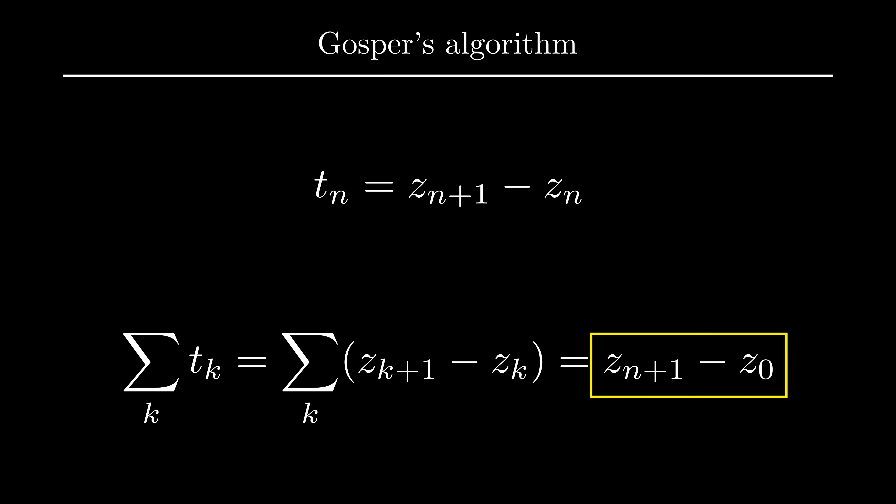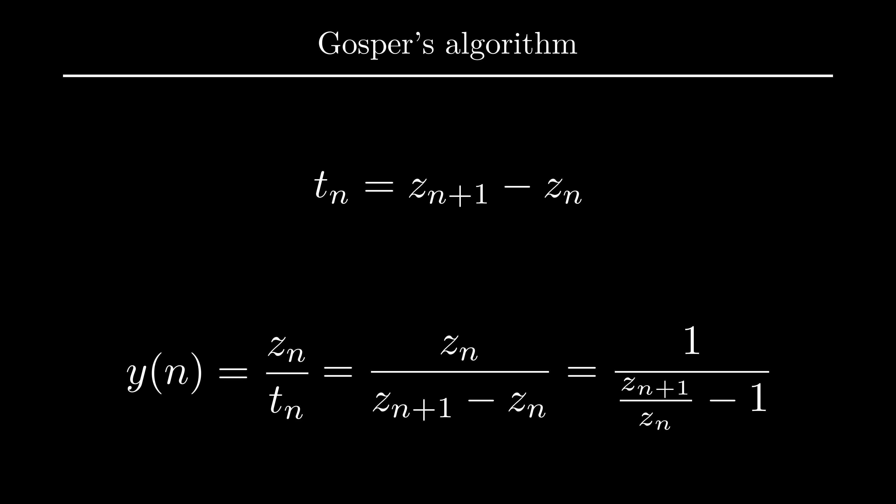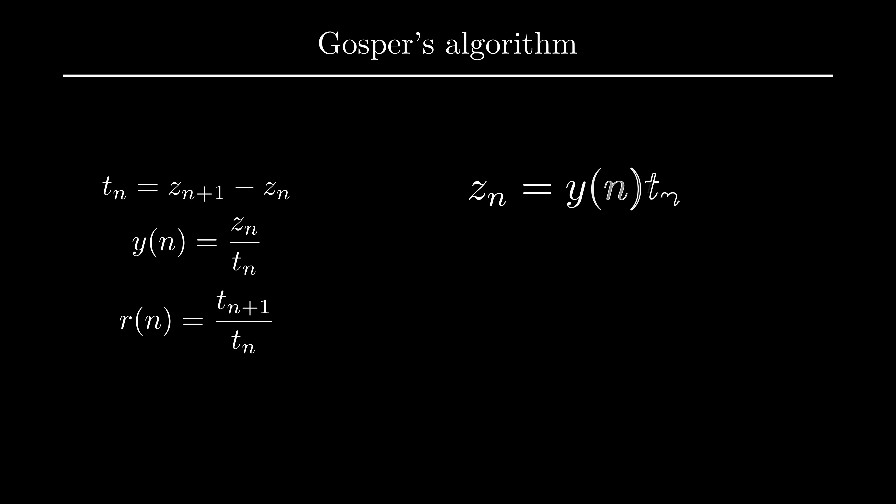First, define the z telescoping terms that we're trying to figure out. If a closed form exists, z will be a hypergeometric term. Now let's define y like so. Notice that y is also a rational function, since z(n+1) over z(n) is a rational function by the definition of the hypergeometric term. Define r, which is rational by the same definition. Now we solve for z from the y definition, plug it into this equation here, and then divide by t(n) on both sides. We have now reduced the problem of finding a closed form of the hypergeometric sum to finding rational solutions y of this equation.